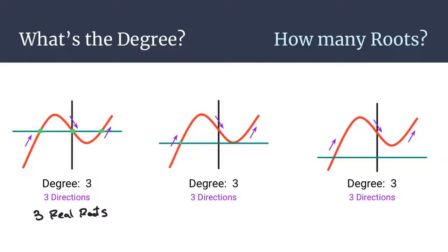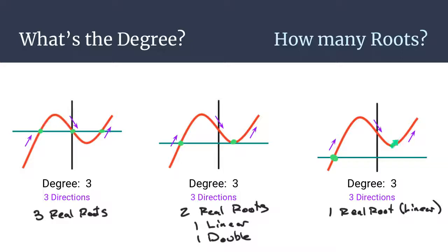For the second cubic graph, we have one x-intercept and a second x-intercept, which means we have two real roots, but one of them is a double root — so one linear root and one double root. For the third graph, we see that we only have one x-intercept, so that tells us we're going to have one linear real root. But there is this spot where the parabola is opening away from the x-axis. Therefore, that gives us two complex roots, because as the graph has this parabola piece that opens away from the x-axis, that tells us it has two complex roots.